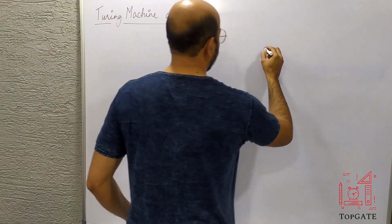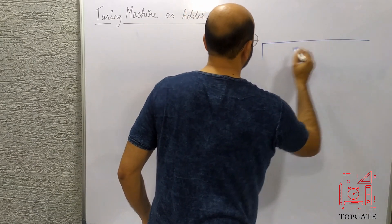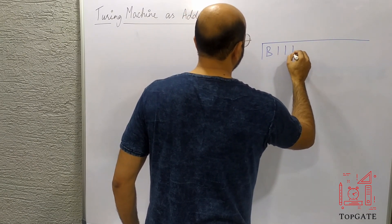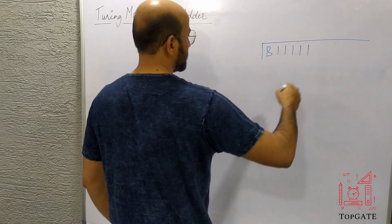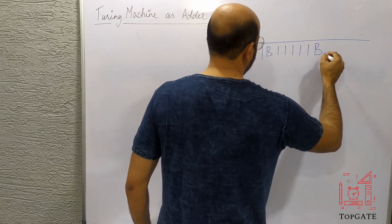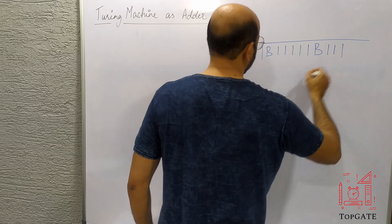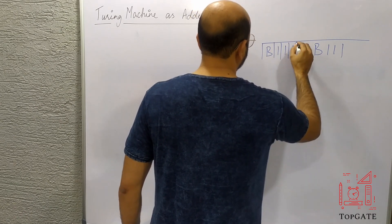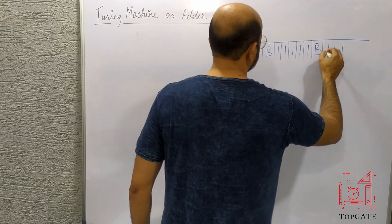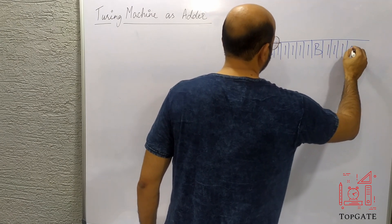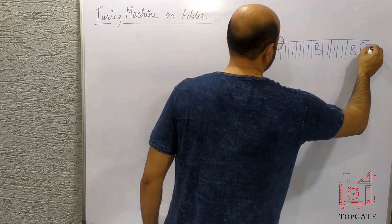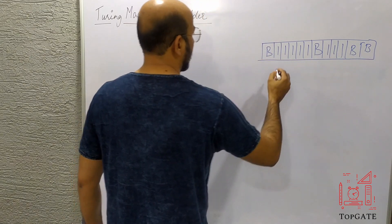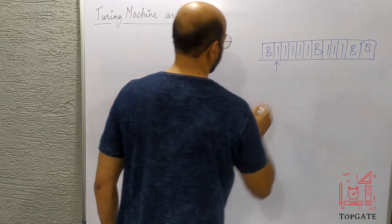Now let's design the Turing machine formally. The input tape has some blanks, then five ones, followed by a blank separator, then three ones, and then more blanks. The read-write head is currently on the first one.